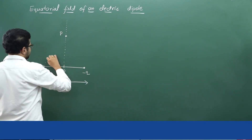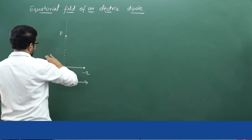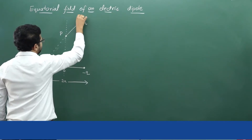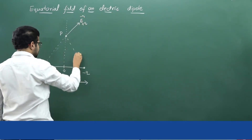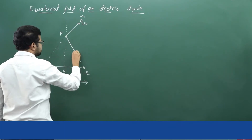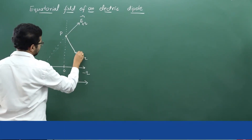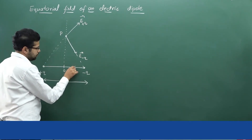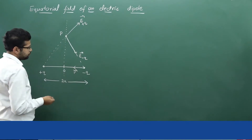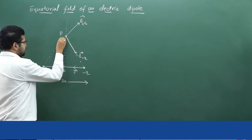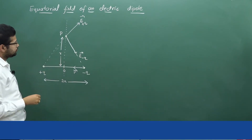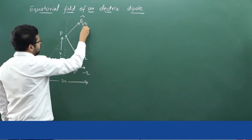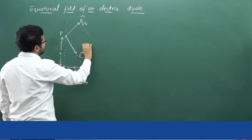From the properties of electric field lines, we know that the electric field due to a positive charge is away from the positive charge, and the electric field due to a negative charge is towards the negative charge. This is E of minus q. The electric dipole moment is always directed from negative to positive, and the point is always considered at a distance r from the center.